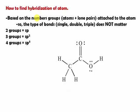In this lesson, we are going to look at the shortcut to determine the hybridization of an atom. Now, the hybridization of an atom is based on the number of groups, that is the atoms or the lone pair that attach to that specific atom.